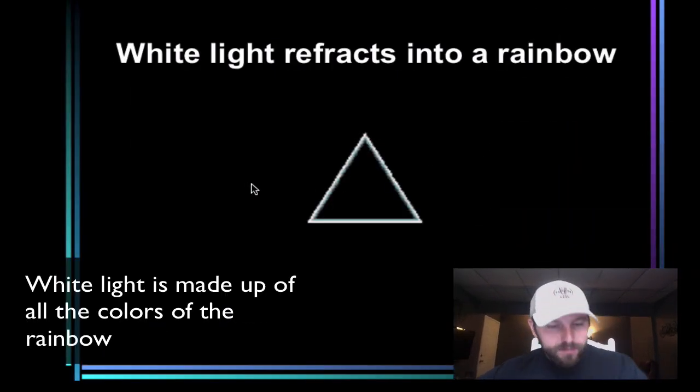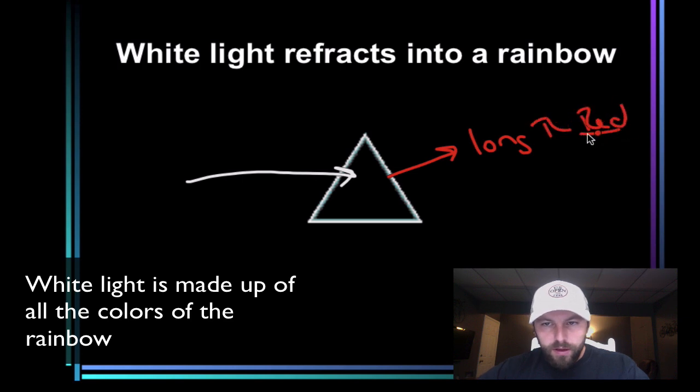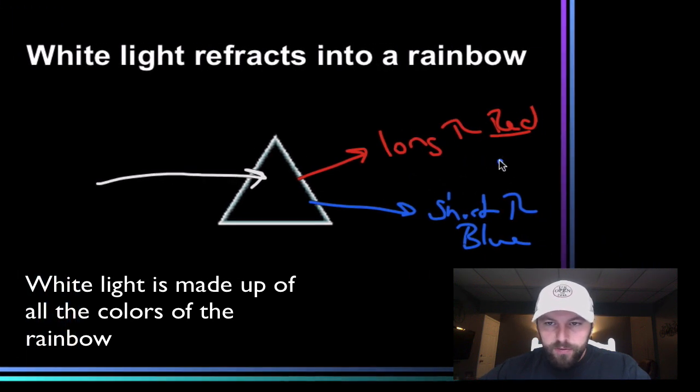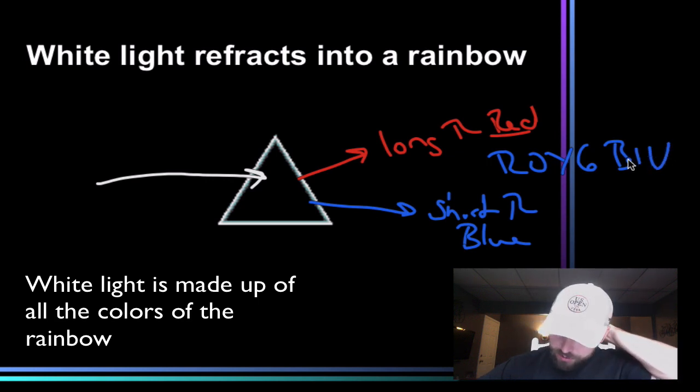White light, once passed through a prism, will refract out into its component colors or rainbow. Let's say red right here with its long wavelength. All the way through all the other ones, red, orange, yellow, green, blue. Short wavelength blue. And all the other colors, basically, we'll have Roy G-Biv right here. So prisms do that. White light is made up of all the colors of the rainbow.